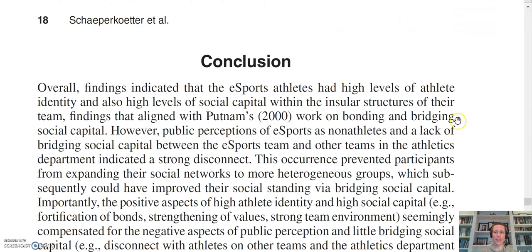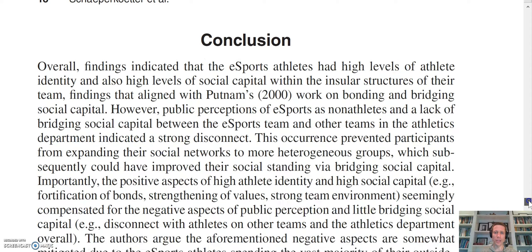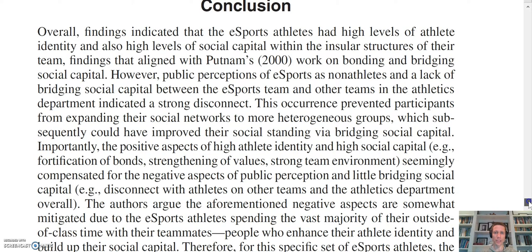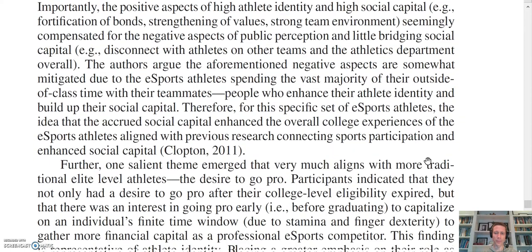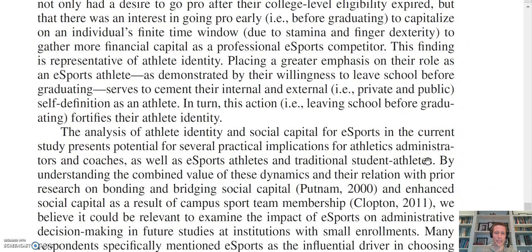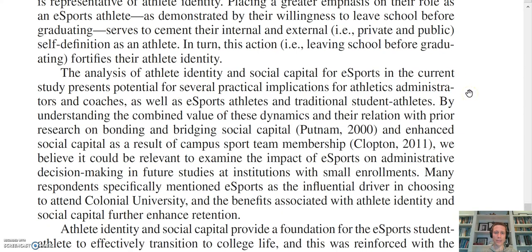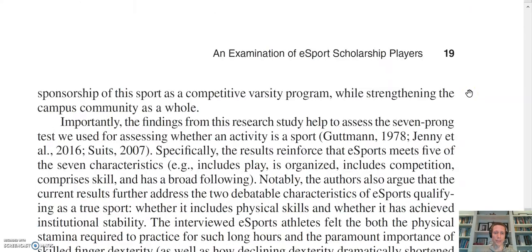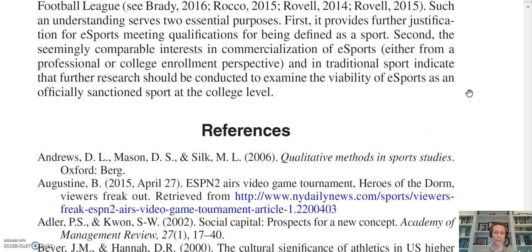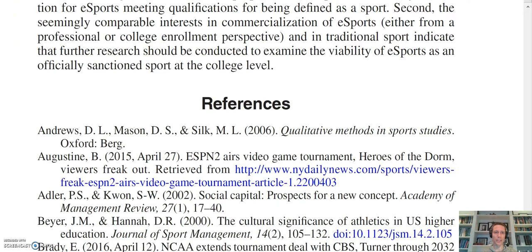Here is an example of a peer-reviewed journal article where the implications are embedded within the conclusion without a subheading. Here's the start of the conclusion; scrolling down into the third paragraph, it reads: 'The analysis of athlete identity and social capital for eSports in the current study presents potential for several practical implications for athletics administrators and coaches as well as eSports athletes and traditional student athletes.' eSports, by the way, are competitive video gaming. The implications section spans three paragraphs to finish off this 21-page article.